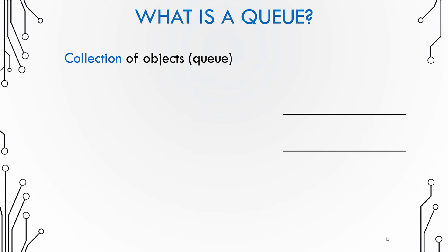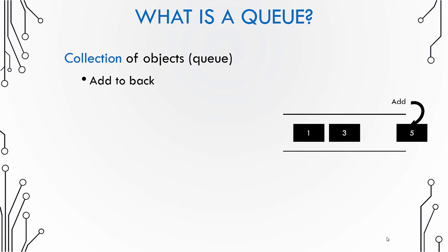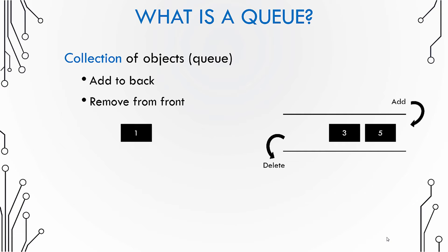Here we have a collection of objects stored in memory, and objects are always added to the back of the queue. For example, if you are buying a movie ticket and there is a queue of people, you would always go to the back of the queue. In the same way, new objects are added to the back of the queue and removed from the front of the queue.